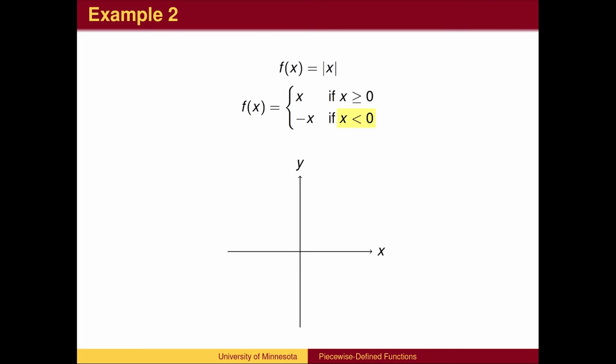Recall that x is less than 0. In other words, x itself is negative. The negative sign is a negative on a negative, a double negative. The double negative makes the entire output positive.